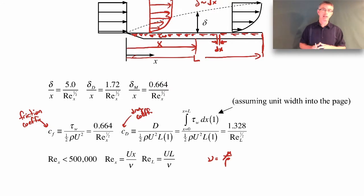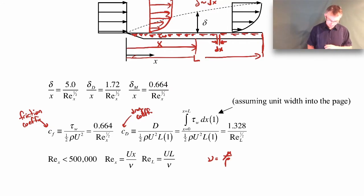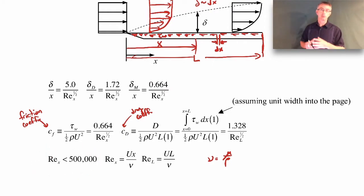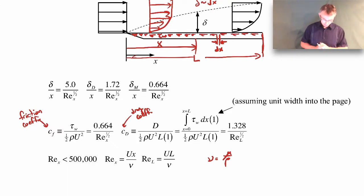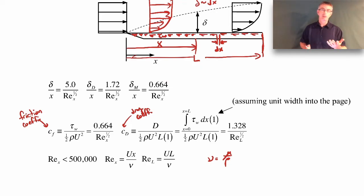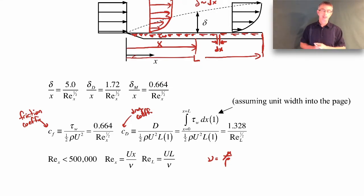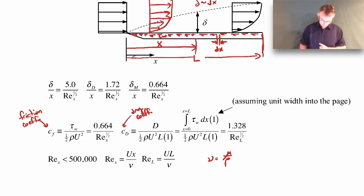Remember the 500,000 number. When you're dealing with Reynolds numbers less than about 500,000, the Blasius solution is valid. If you're dealing with Reynolds numbers greater than 500,000, it's not valid — you should use some other expression which we'll talk about in a different lecture. These equations don't need to be memorized; they'll be available on a formula sheet. Just keep in mind they're restricted to laminar boundary layers.